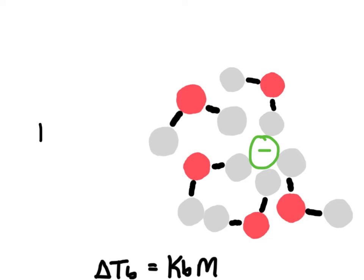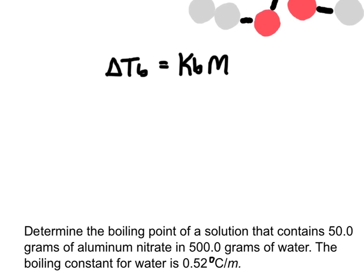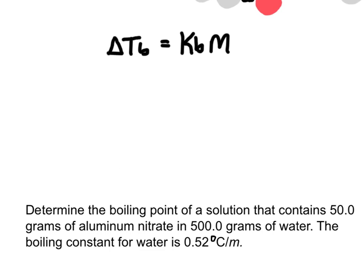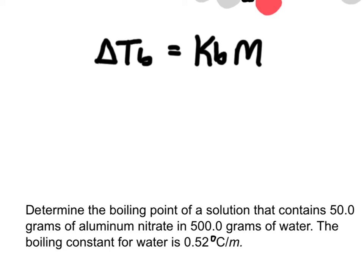Adding non-volatile solutes changes the boiling point to something higher than usual. Water normally boils at 100 degrees Celsius; adding solutes might raise it to 105 degrees Celsius. The equation for boiling point elevation looks similar to freezing point depression but uses a different constant — the boiling constant. For water, it's 0.52 degrees Celsius per molal, and we still use molality for concentration.